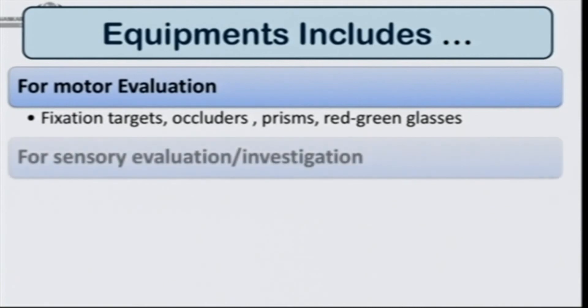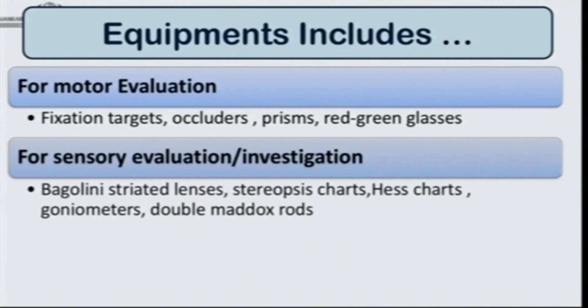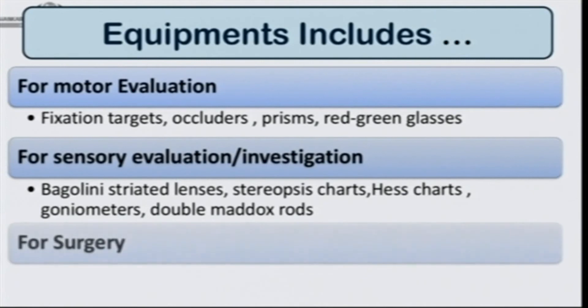For the sensory evaluation, binocular investigations would include Worth 4.0 tests, Bagolini striated lenses, the stereopsis charts, the HES charts, the goniometers, etc., and those required for surgery. We would cover each of these in detail.